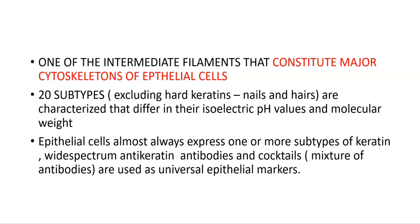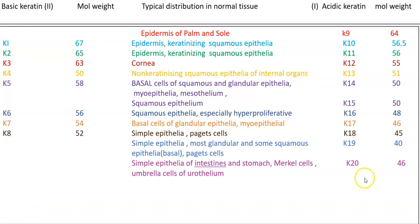Cytokeratins are a complex family composed of more than 20 subtypes. Epithelial cells almost always express one or more subtypes of keratin. Wide spectrum antikeratin antibodies and cocktails — that is, mixtures of antibodies — are used as universal epithelial markers. We have 20 types of cytokeratins, K1 to K20, divided into two basic types: type 1 (acidic) and type 2 (basic) keratin.